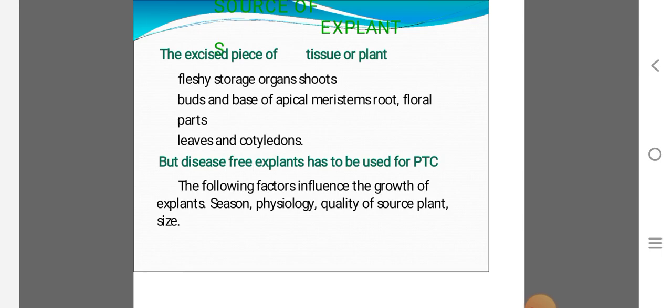Then explant, formation of explant. Explant is any particular piece in plant. We can produce from fleshy storage organ of shoots, buds, stem, leaf, cotyledons. Any of these we can use as explant to produce plantlets.